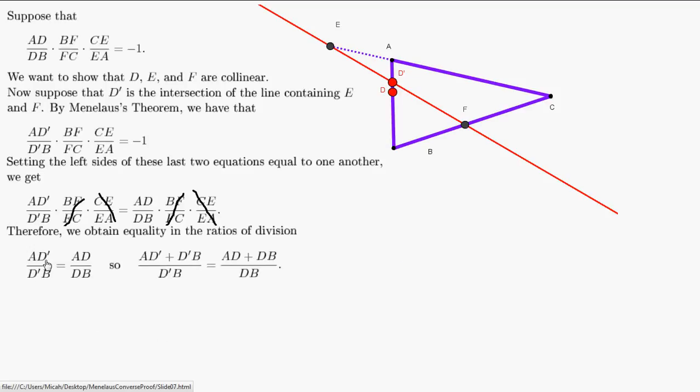We're left with AD'/D'B equals AD/DB. Now we're pulling a trick: add the denominator to the numerator of both fractions, which shouldn't change anything. So we add D'B to the numerator on the left and DB to the numerator on the right.